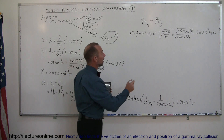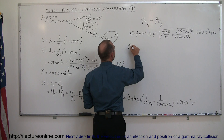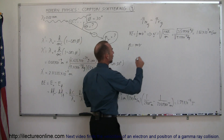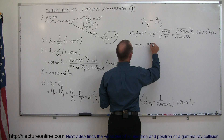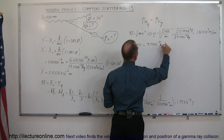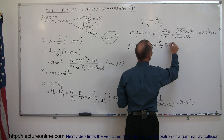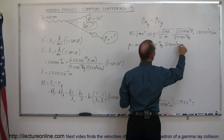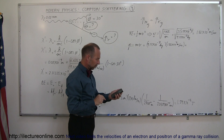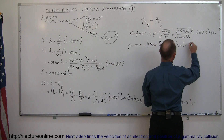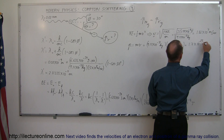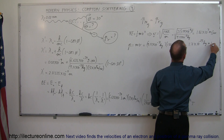Now that we know the velocity of the electron, we can say that the momentum p equals mv — we don't have to worry about the gamma, the relativistic effect. So this is equal to the mass, 9.11 times 10 to the minus 31 kilograms, times velocity, 1.86 times 10 to the 7th meters per second. Times 9.11e-31 equals — and that gives us 1.7 times 10 to the minus 23 kilogram meters per second.